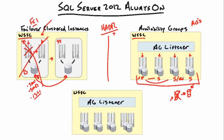Active secondaries allow us to offload work from production. A very popular scenario is offloading backup processes to a secondary replica. Another major scenario is reporting — nobody likes reporting running on their production database because it takes up processing power, generates long-running queries, creates locks and problems. With read-only active secondaries, we mark one as read-only, have developers use 'ApplicationIntent=ReadOnly' in their connection string, and set up an availability group listener to route read-only requests to that secondary.